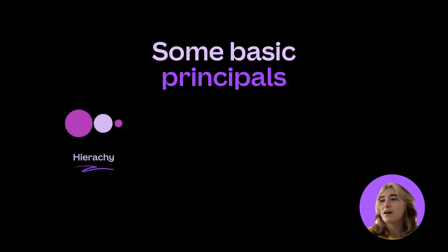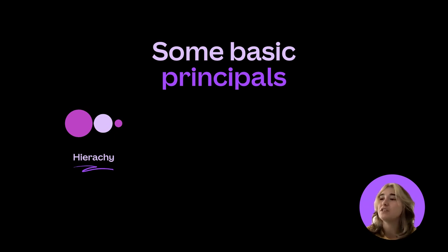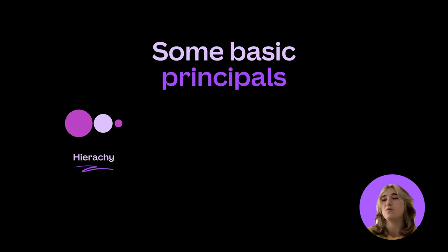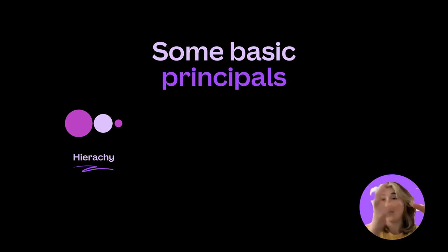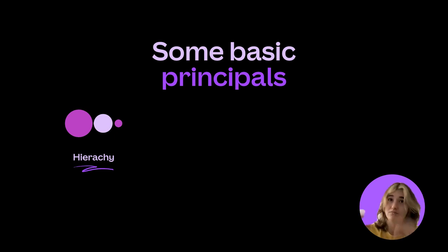Hierarchy is making things visually stand out in order — so like one, two, three, four, five. Maybe your heading is the largest font, and then any copy underneath the heading would be smaller. That way your eyes are drawn to the heading first because it's the largest thing on the page, and then to the copy underneath because it's smaller.